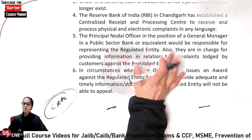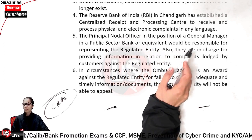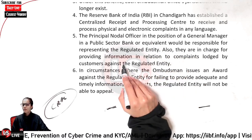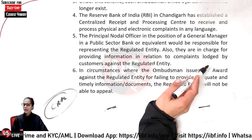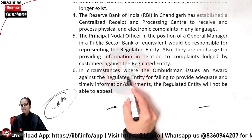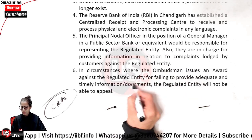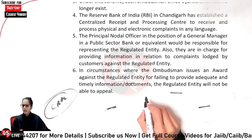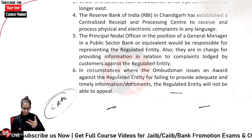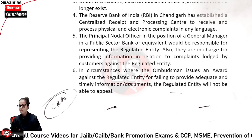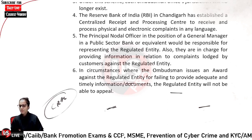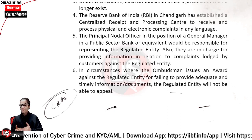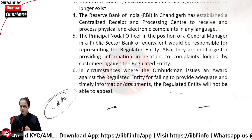The Principal Nodal Officer, holding the position of a General Manager in a public sector bank or equivalent, would be responsible for representing the regulated entity and for providing information in relation to complaints lodged by customers against the regulated entity. In circumstances where the Ombudsman issues an award against the regulated entity for failing to provide adequate and timely information or documents, the regulated entity will not be able to appeal. If you do not submit the required documents within the specified period, you lose the right to further appeal.